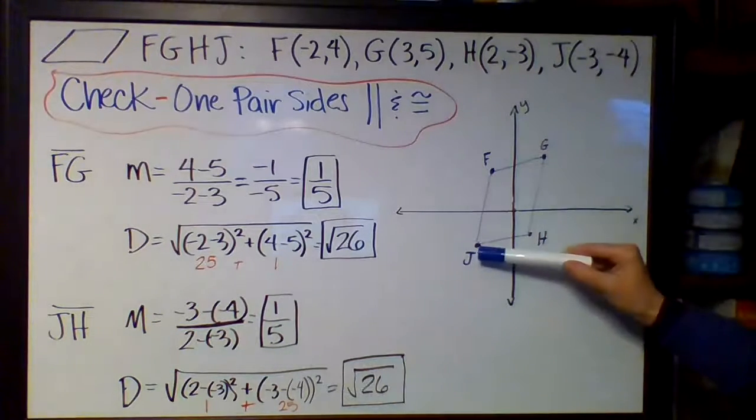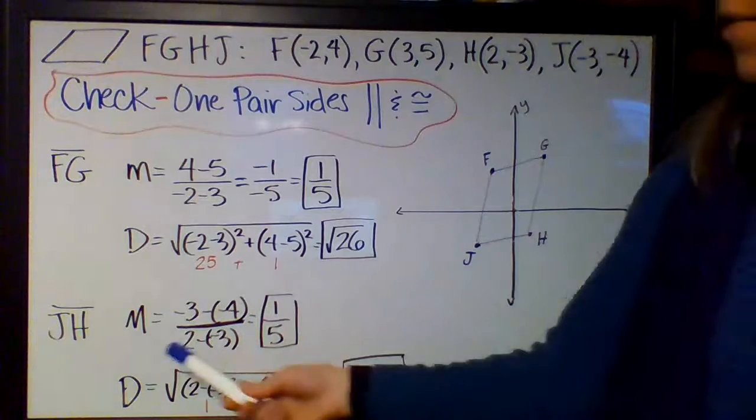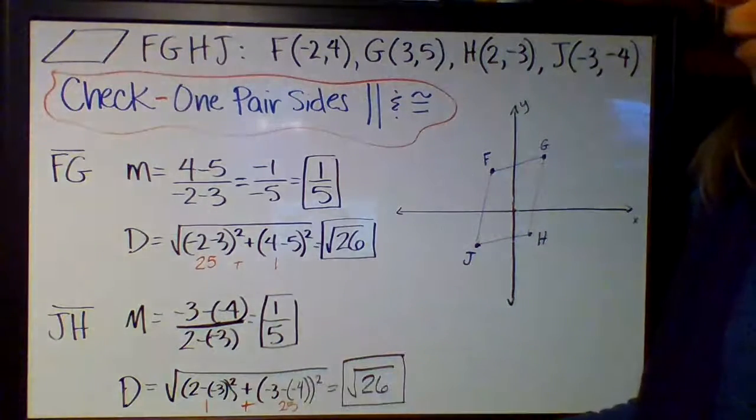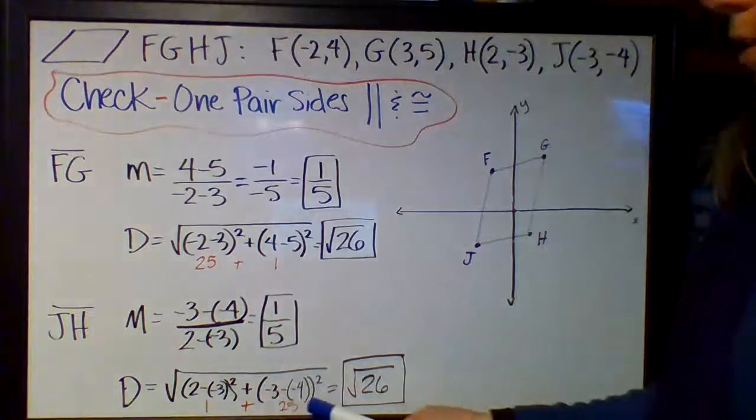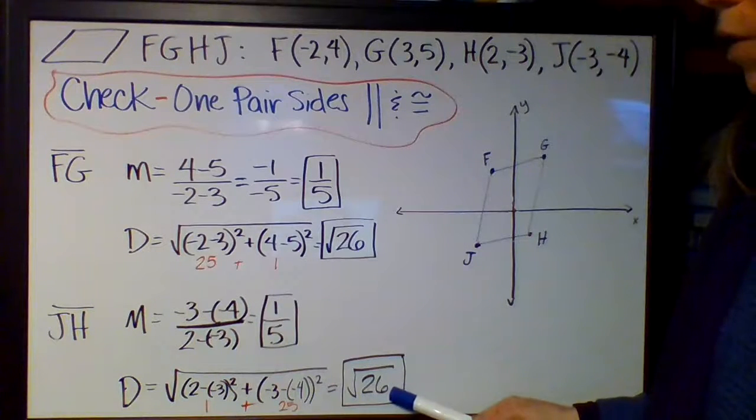I did the same thing for its opposite side, JH, down here. I calculated slope and found it was 1 fifth. I used the distance formula to calculate its distance and found it's the square root of 26.